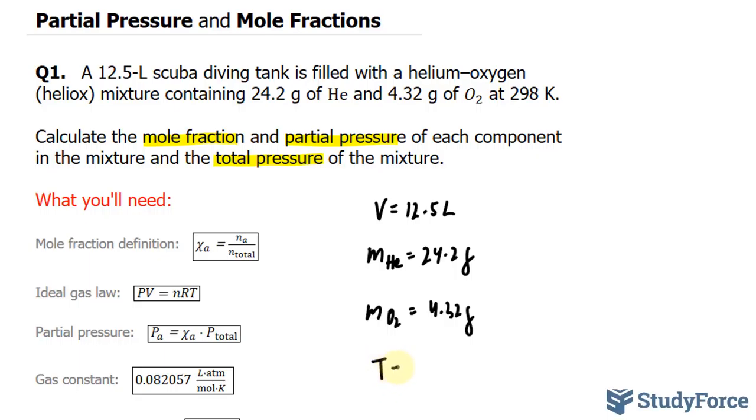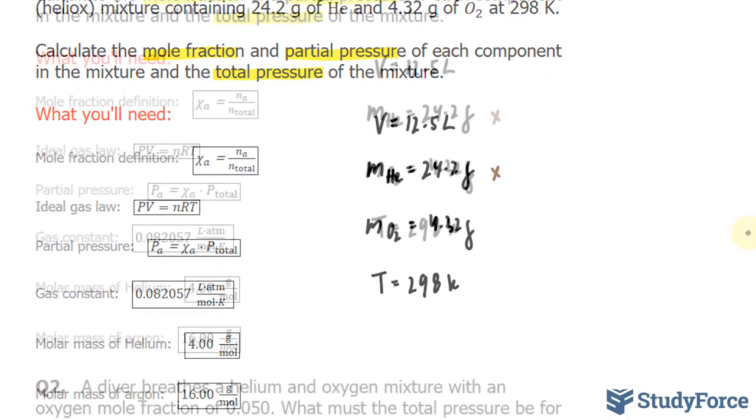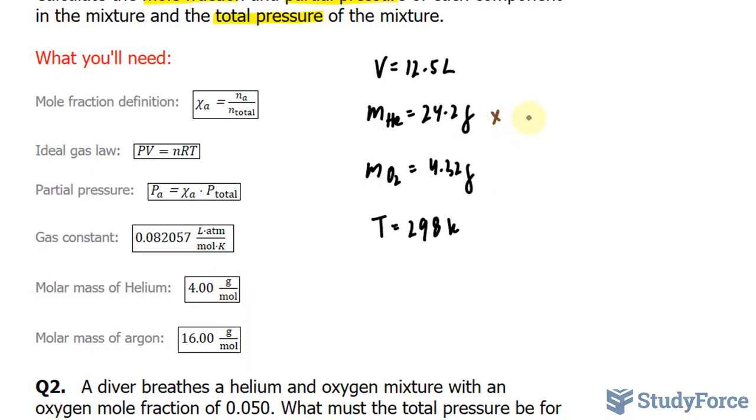Let's break this down step by step. I want to start by writing out everything that's been given to us. We've been given the volume: V equals 12.5 liters. The mass of helium, which I'll represent as little m_He, is equal to 24.2 grams. Also, the mass of O₂ is equal to 4.32 grams, and the temperature is 298 Kelvin.